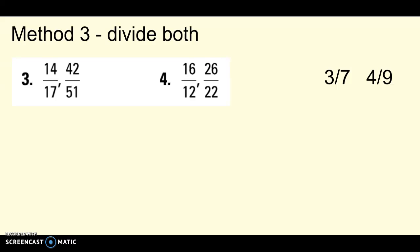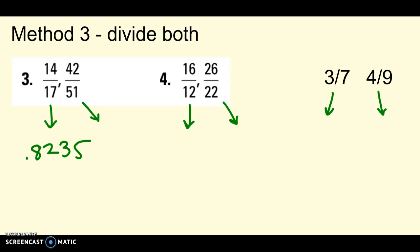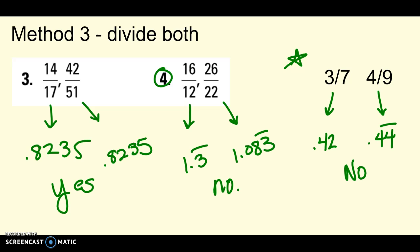Method 3: divide them both. If I divide both of my numbers and I have a calculator, it's pretty handy to do it this way — divide them both and see if you get equal decimals. So when I do 14 divided by 17, I get 0.8235. And then 42 divided by 51 is the exact same thing on my calculator. Yes — if the decimals are identical, they're proportional. You try the next two. The decimals I got are not equal, so that pair is not proportional — if decimals are not equal, not proportional.